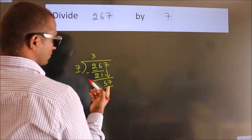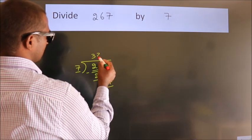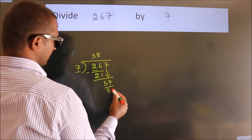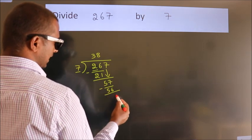A number close to 57 in the 7 table is 7 eighths, 56. Now, we subtract. We get 1.